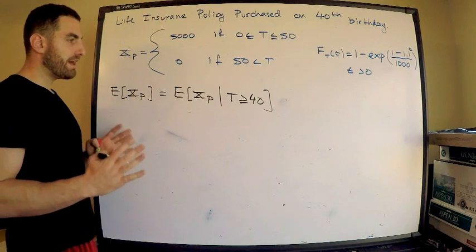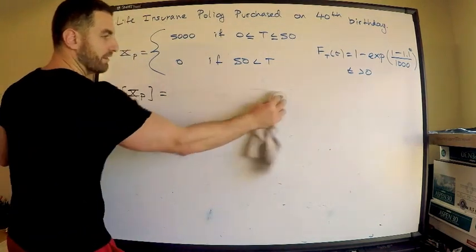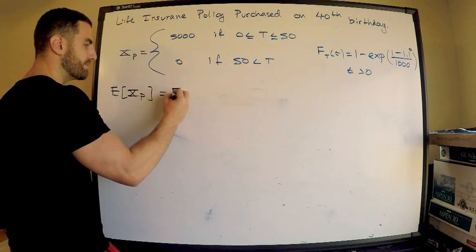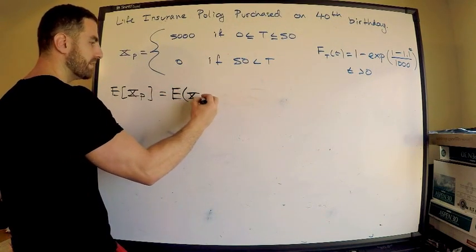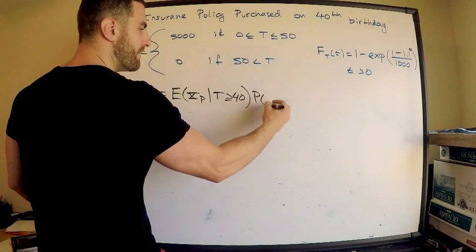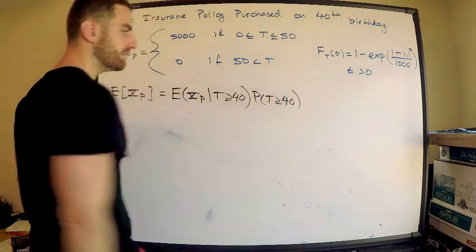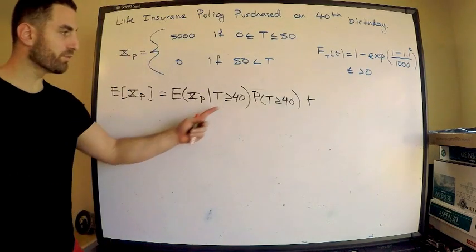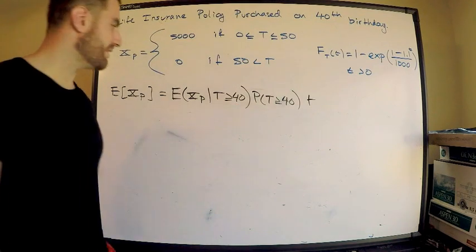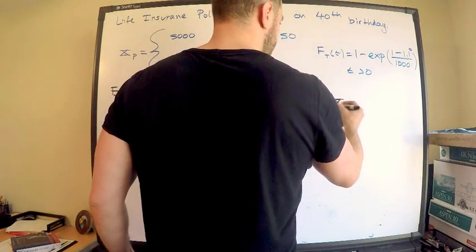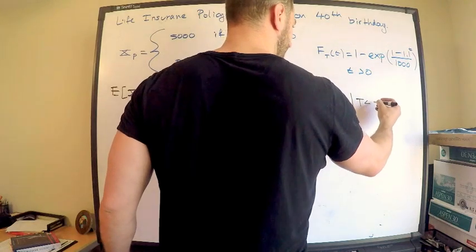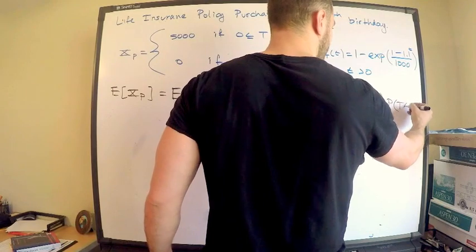I'm going to write down a mixture for the expected value, so this is equal to the expected value of the insurance payment, given that T is greater or equal to 40. This is what we want, because he's already lived 40 years. Now remember how this works, this is a lot like the law of total probability, but I use it for expectation. Let me give myself some more room. This is the expected value of the insurance payment, given that he's already lived 40 years, because he has, right, times the probability that he's lived 40 years.